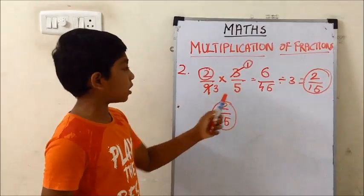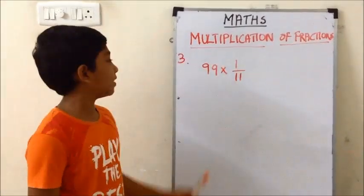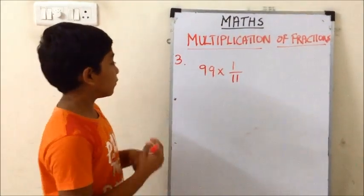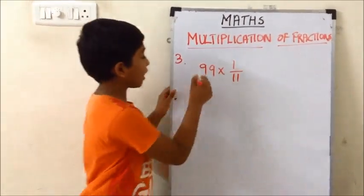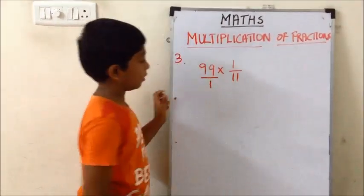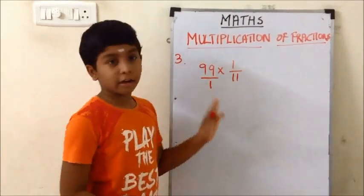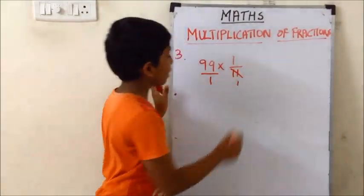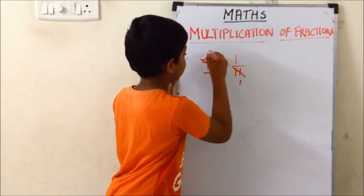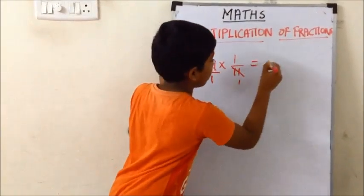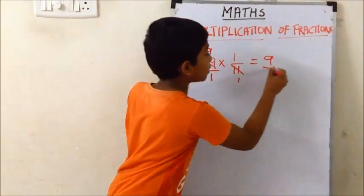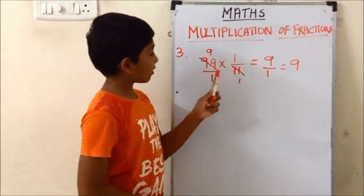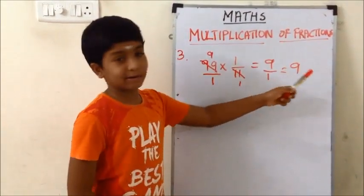The answer for that question is 2/15. Now I have taken another fraction: 99 into 1/11. If there is no denominator, we can write it as 1. Using the cut-short method, in the 11 times table, 11 comes first and 99 comes ninth. So 9 into 1 is 9, and 1 into 1 is 1. The answer is 9/1, which equals 9.